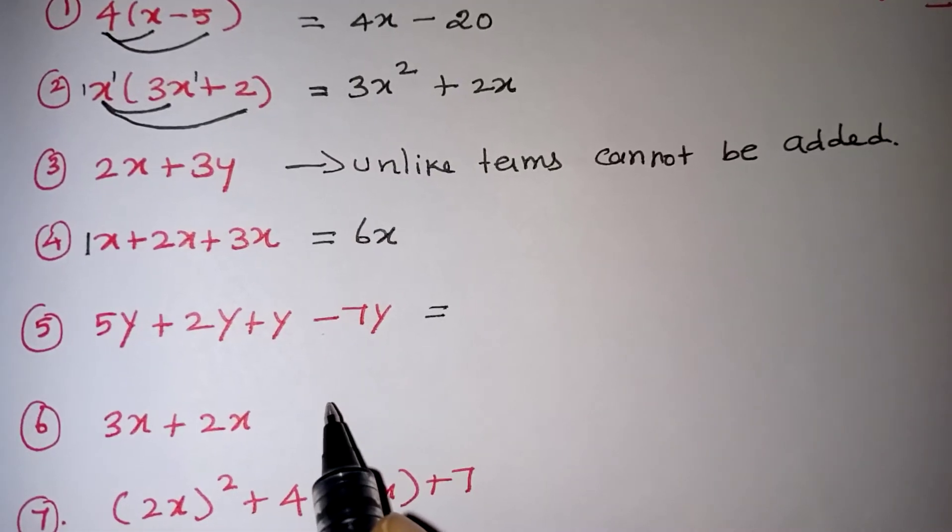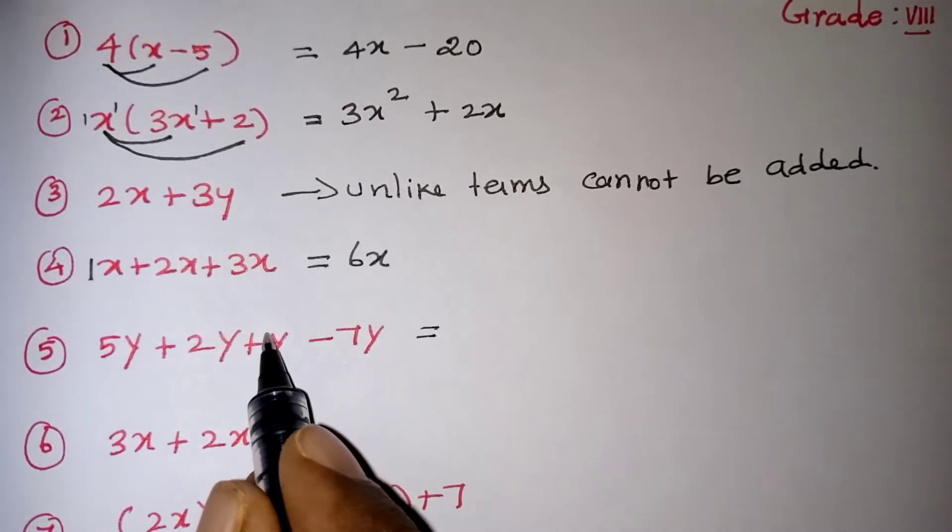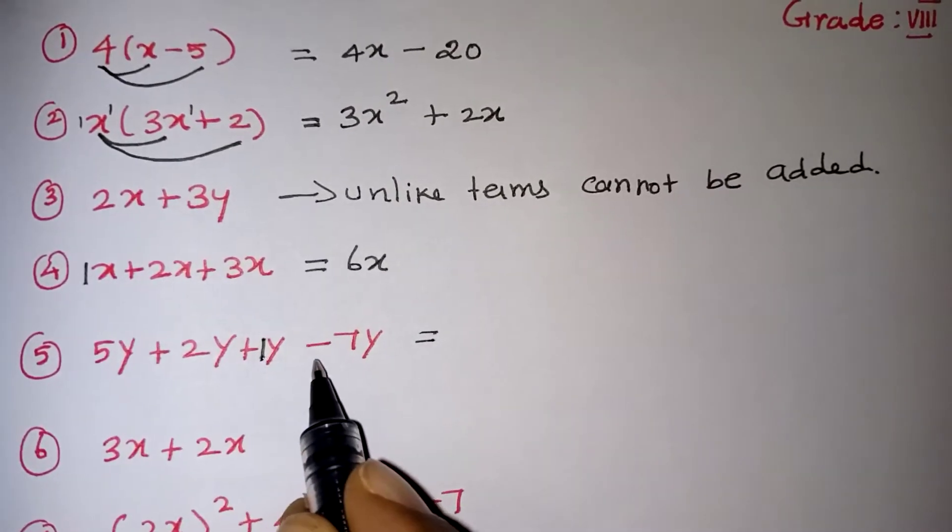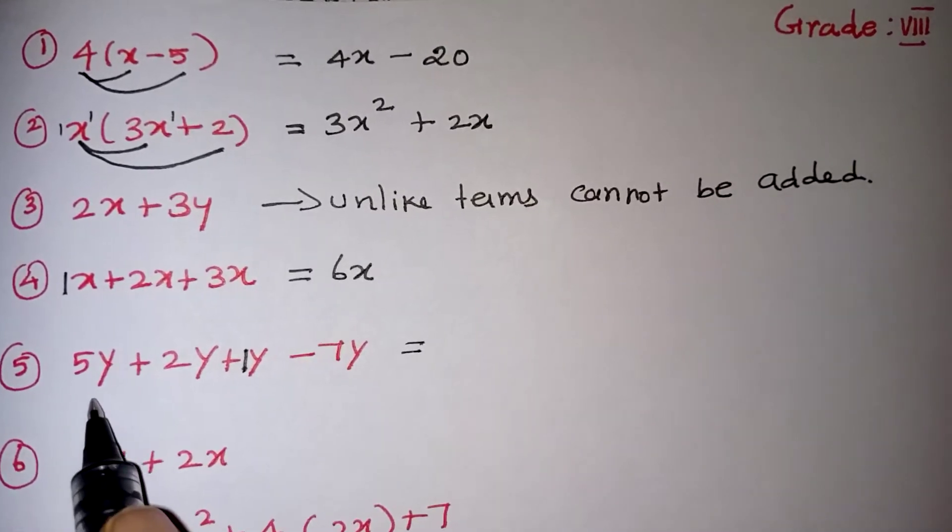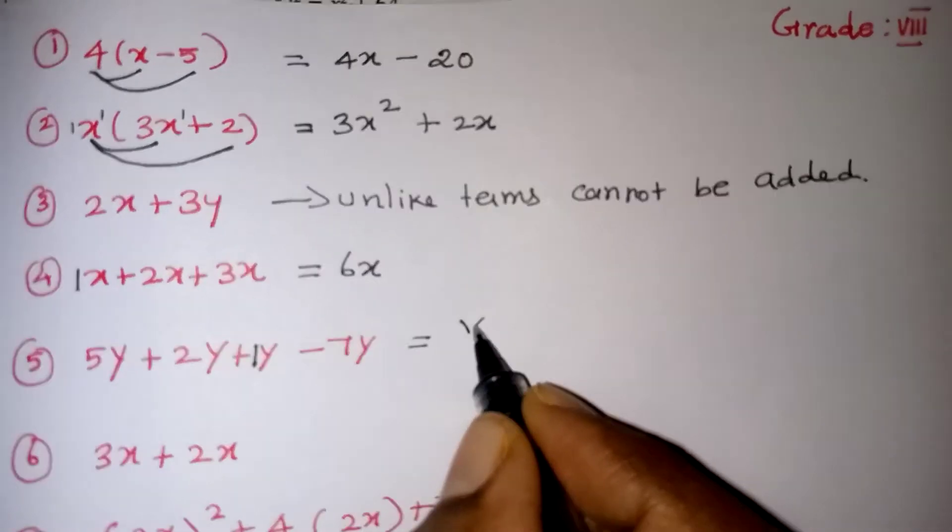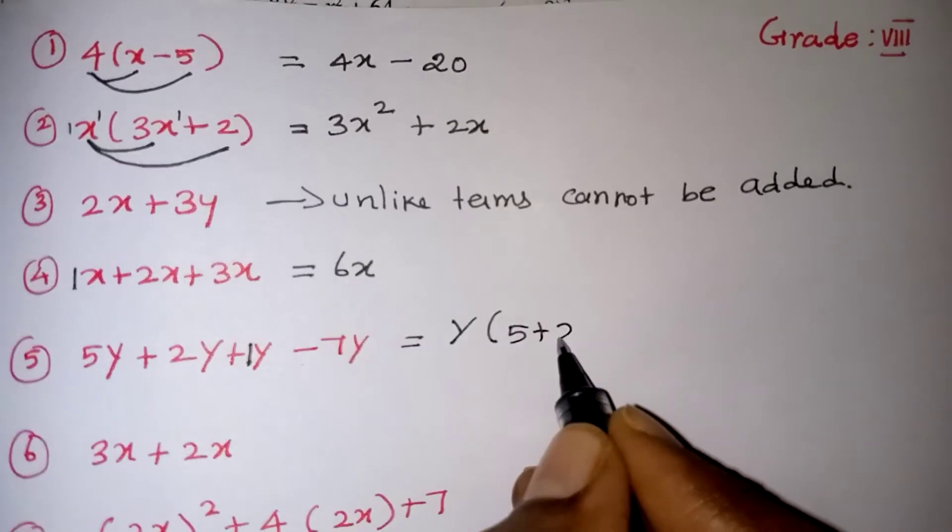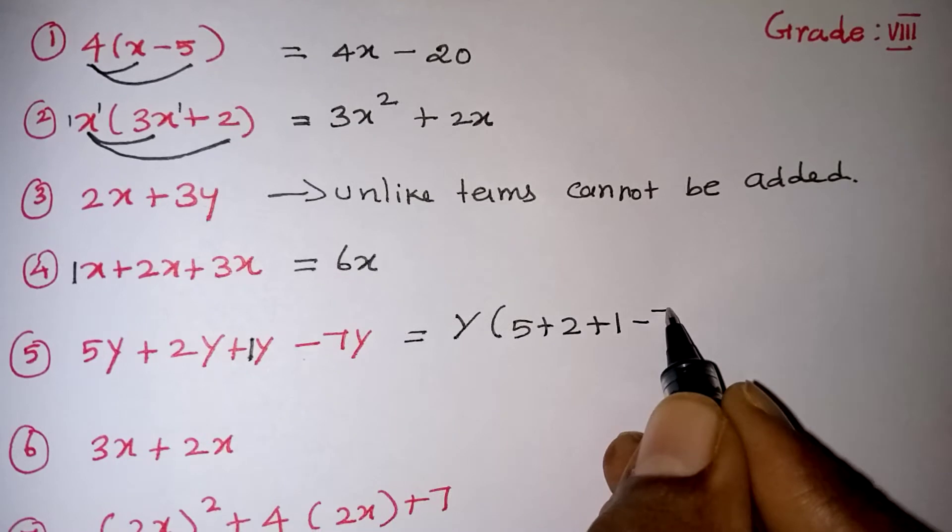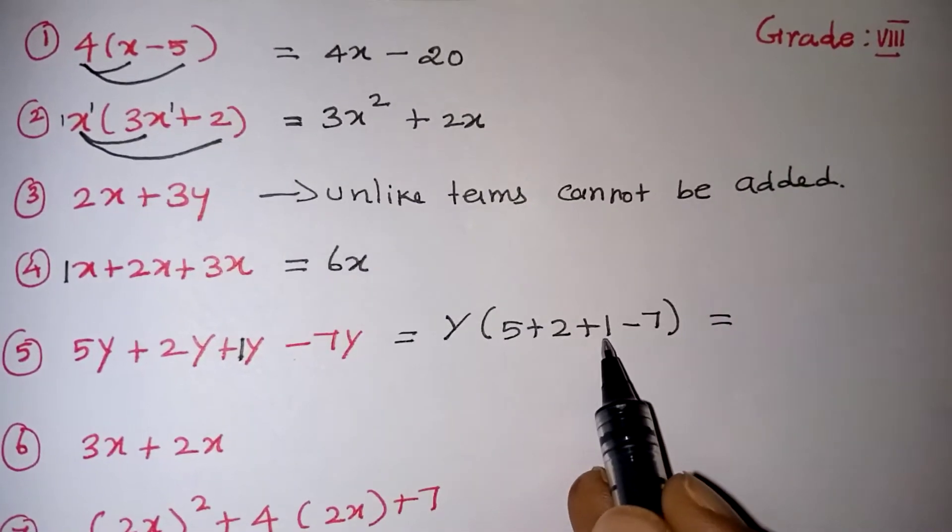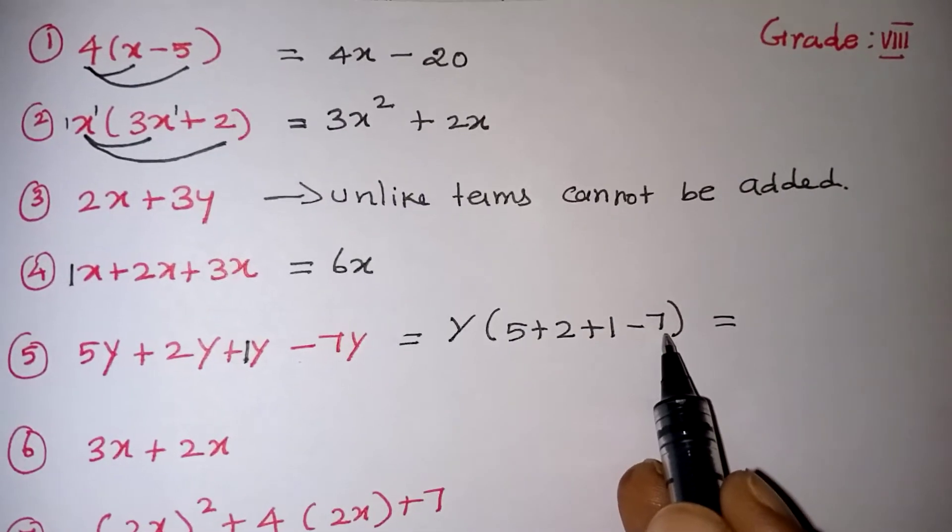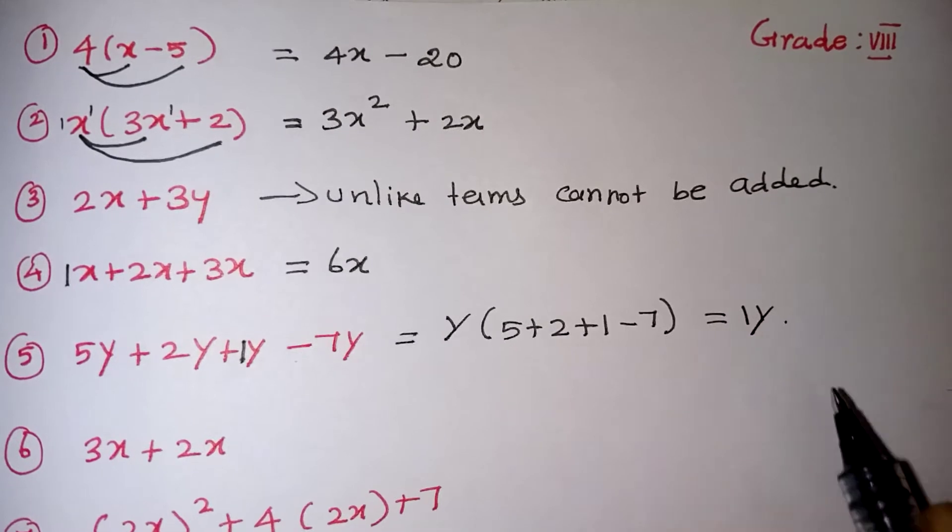Look at question number 5 now. 5y, 2y, 1y. This nothing is there now. You have to take it as 1y minus 7y equal to what they are asking. Children, whenever you are getting a same constant, that means that y is common. We can take it outside. Remaining 5 plus 2 plus 1 minus 7 you should write it. Now 5 plus 2 is 7. 7 plus 1 is 8. 8 minus 7 will give you 1. So 1y. So 1 into y will be 1y. That is your correct answer.